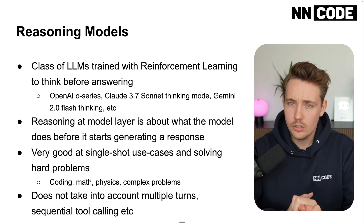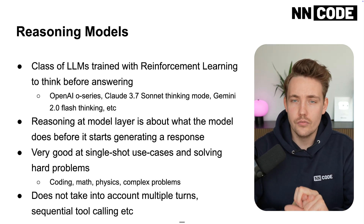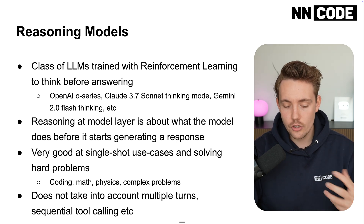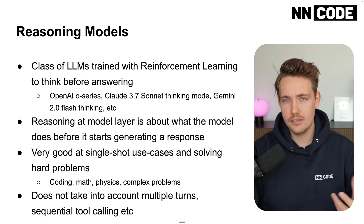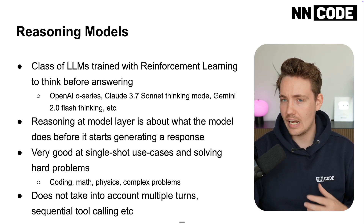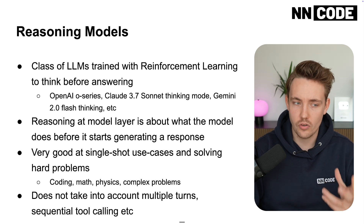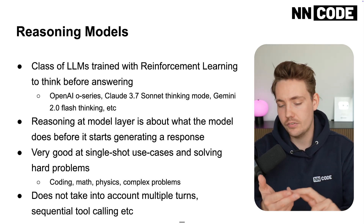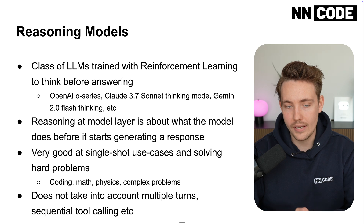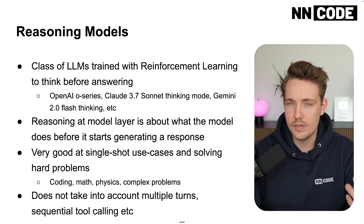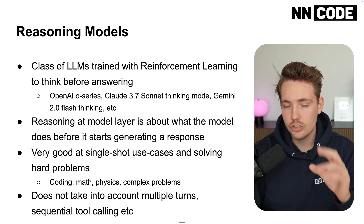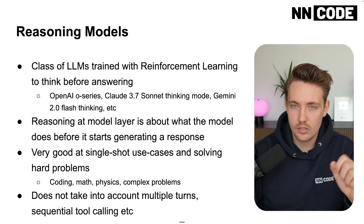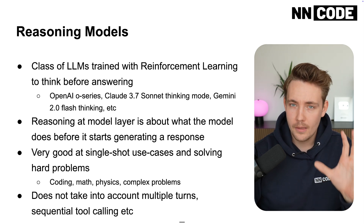Some of the latest language models are trained using reinforcement learning — essentially giving the model human feedback, teaching it how to respond, how to think, and how to solve problems. Examples include the O-series from OpenAI, Claude 3.7 Sonnet in thinking mode, and also the Gemini models in thinking mode.